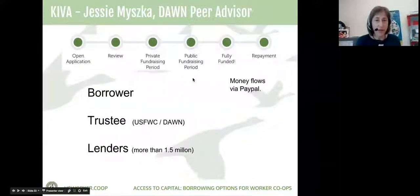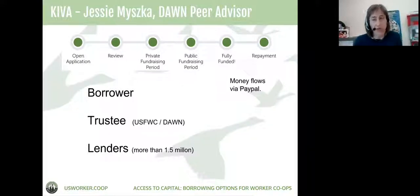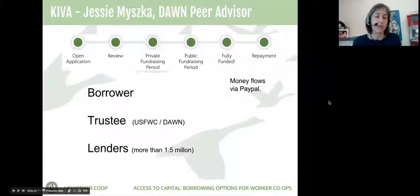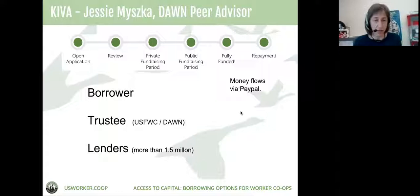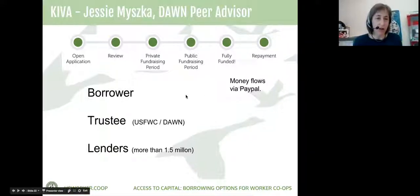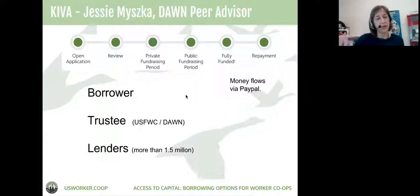The overall Kiva process goes from applying — there are three key roles: the borrower (the co-op), the trustee (in this case the Federation and DAWN as peer advisor), and the actual lenders. The review process is Kiva reviewing the loan. Because Kiva wants trustees to endorse borrowers, the Federation and DAWN work between the application and review stages, helping the borrower prepare the application. When we did our pilot with Teamworks, there was a lot of vetting — so much work that Melissa at the time said, 'With this much work, you could get a $50,000 loan instead of a $10,000 loan.'